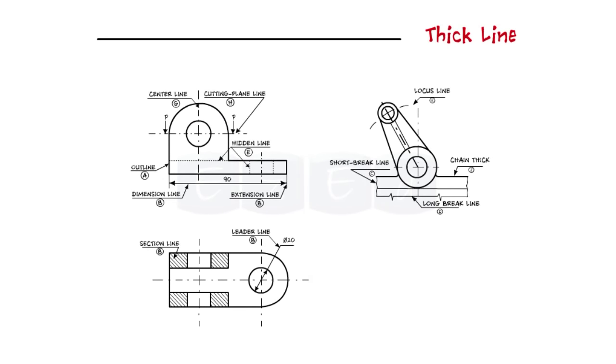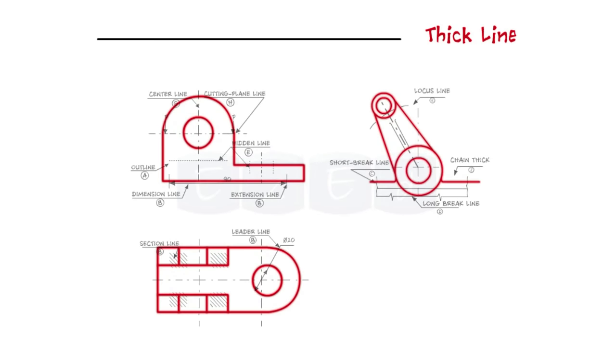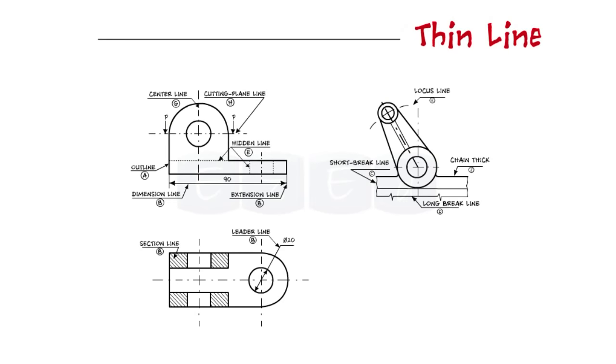First is a continuous thick line. This line is used to display outline and edges of the main drawing. Next is the continuous thin line. This line is basically used for dimension, extension, projection, leaders, hatching, etc.